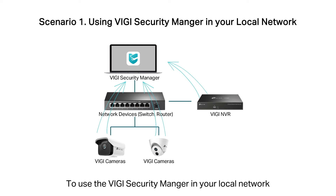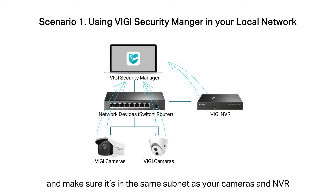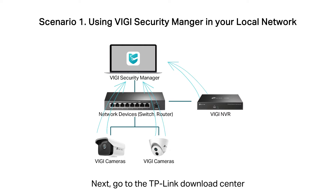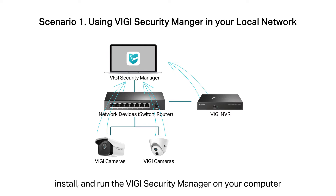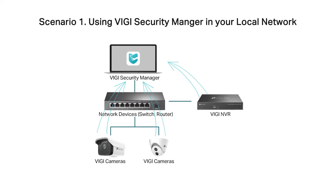Scenario 1: To use the Vigi Security Manager in your local network, connect your computer to the network devices and make sure it's in the same subnet as your cameras and NVR. Then go to the TP-Link Download Center, download, install, and run the Vigi Security Manager on your computer.